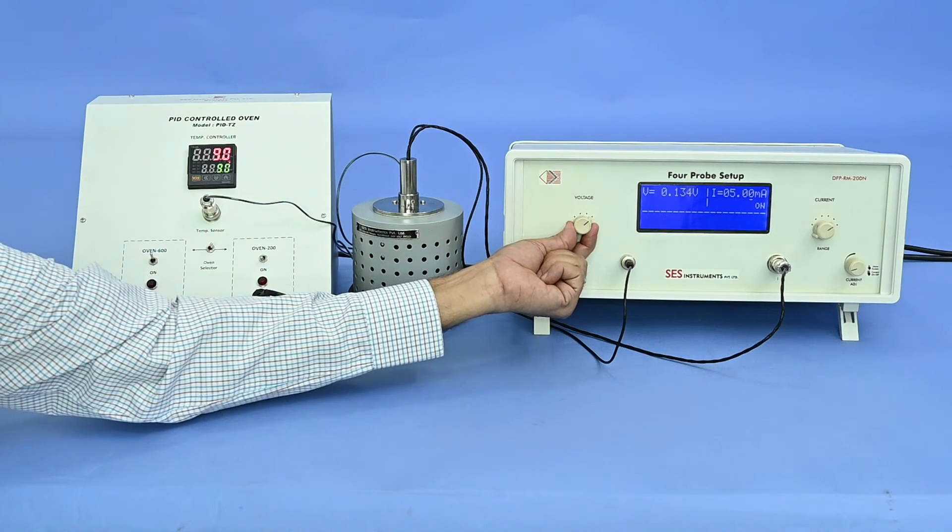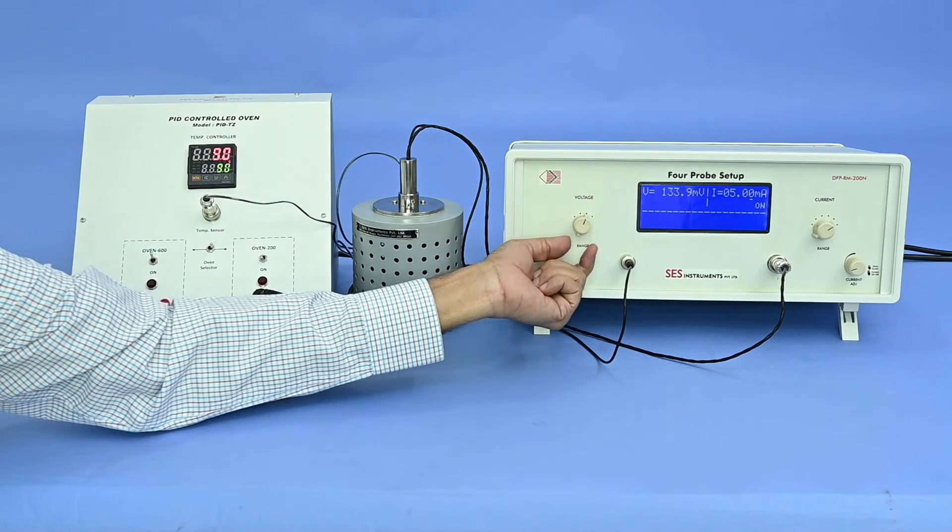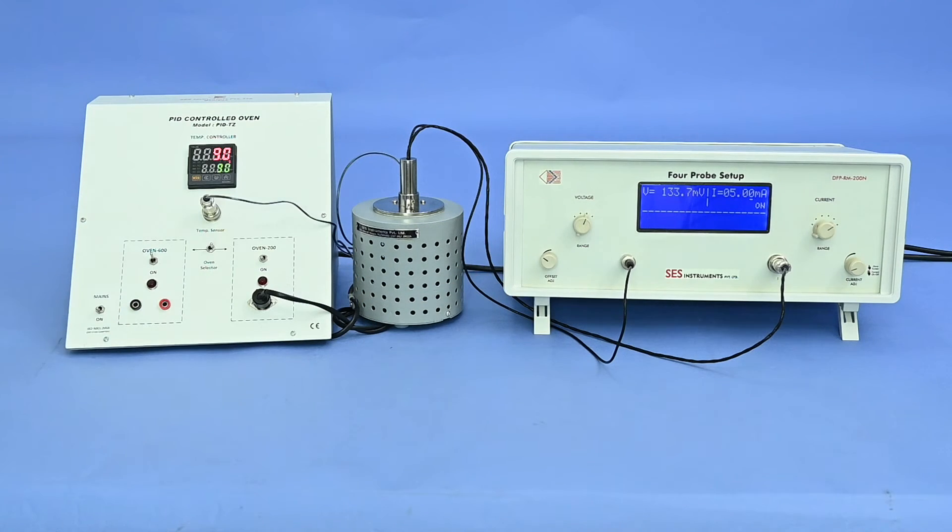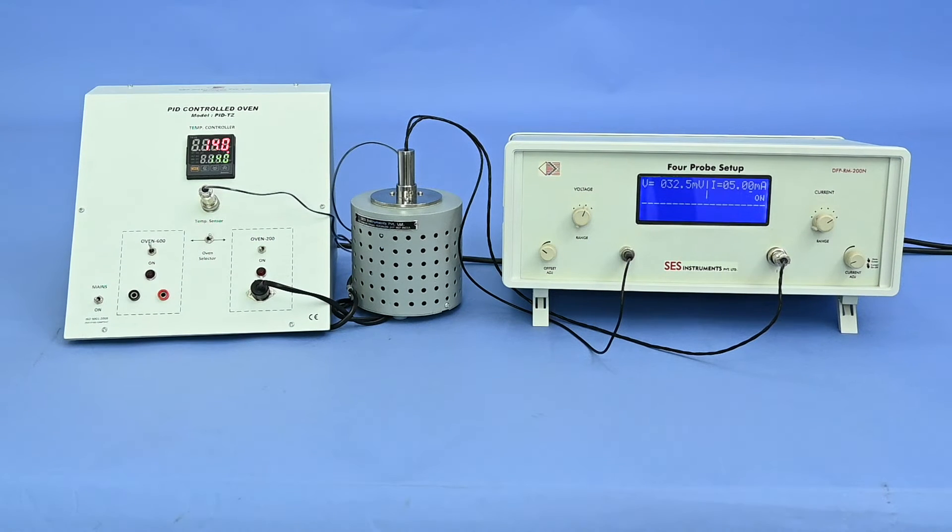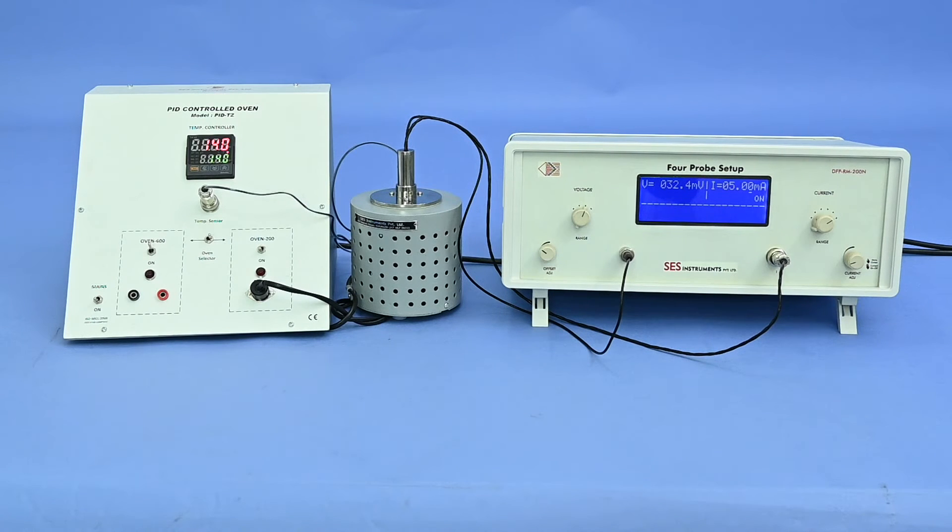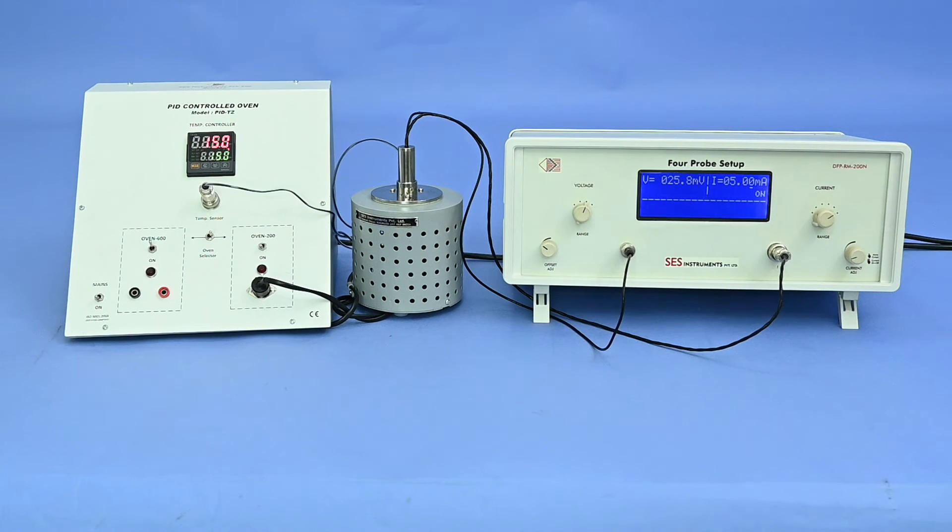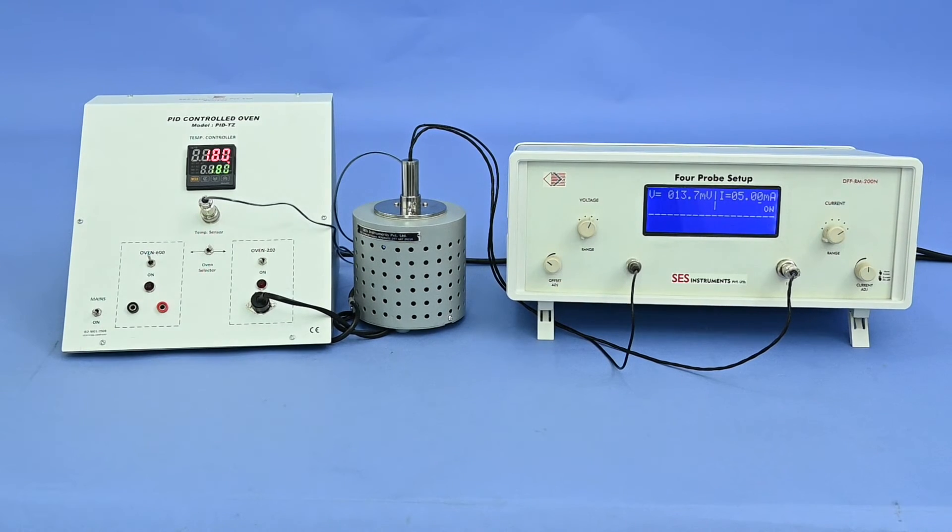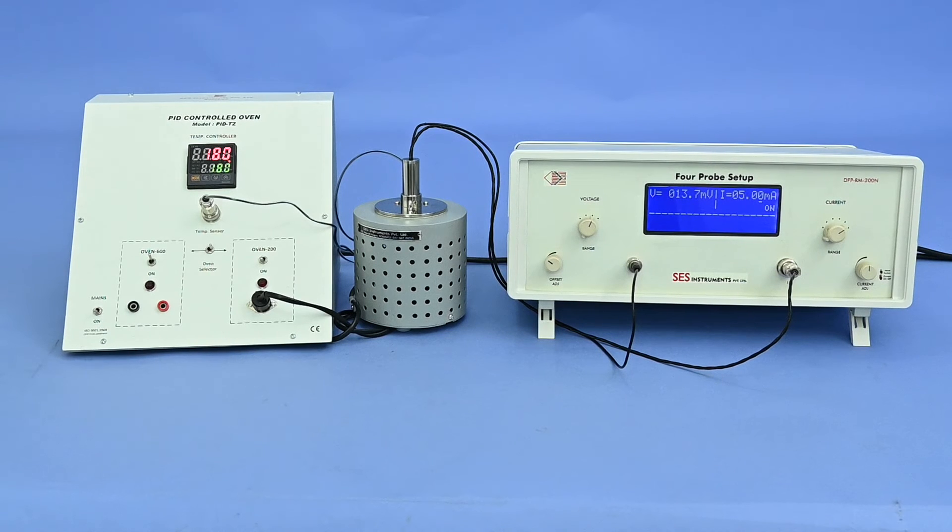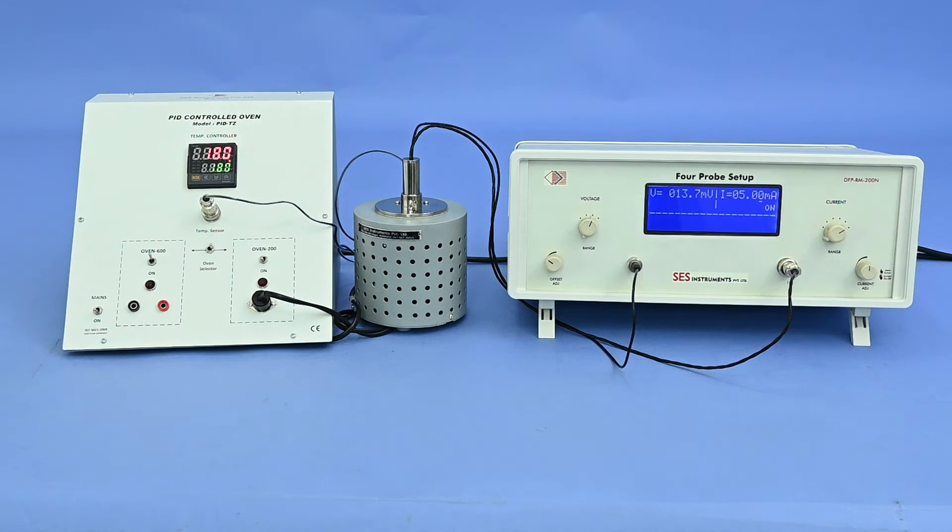Now change the voltage range to take the correct reading. For germanium sample, besides resistivity, we can calculate band gap also. Similarly, we can perform experiment with aluminum and silicon samples but at room temperature only. Band gap measurement of these samples is not possible due to limited range of oven temperature. Take the proper value of correction factor while calculating the resistivity of the sample.